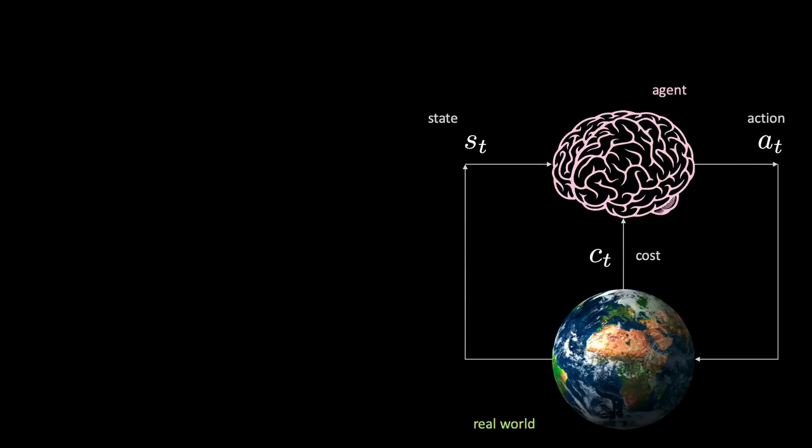A policy defines the behavior of an agent at a given point in time. When we learn a policy by interaction with the real world, we talk about model-free reinforcement learning. Model-free reinforcement learning is very effective but needs lots of environment interactions to learn from. It can be slow, expensive, or dangerous — if you think about trying to drive a car in the real world.